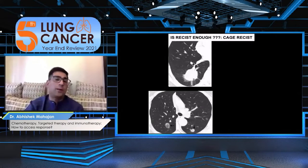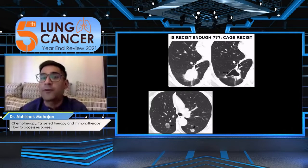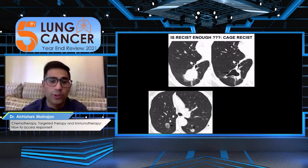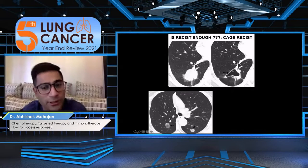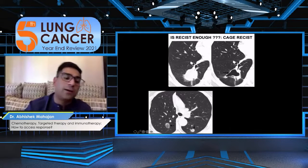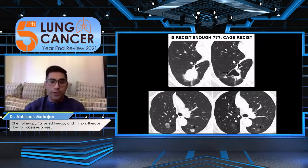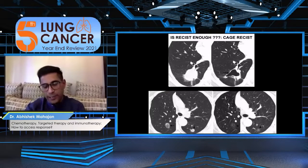RECIST is not enough. You can apply something called modified RECIST or evaluate ground-glass opacity apart from RECIST. You look at the attenuation of the lesion, you measure the maximum thickness of the wall, and also look at the ground-glass changes around the lesion. If you assess these changes, you can document the response better than RECIST in your clinical practice.